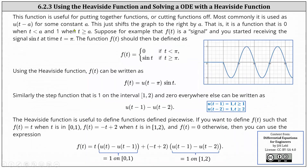This function is useful for putting together functions or cutting functions off. Suppose f(t) is a signal and you started receiving the signal sin(t) at time t equals π. Then f(t) equals zero if t is less than π, and f(t) equals sin(t) if t is greater than or equal to π. Using the Heaviside function, we can write f(t) equals u(t − π) times sin(t), where u(t − π) is zero for t less than π, giving zero times sin(t), and one for t ≥ π, giving one times sin(t).